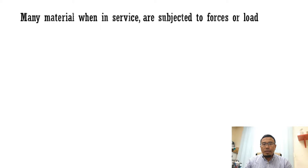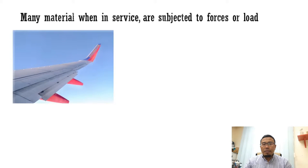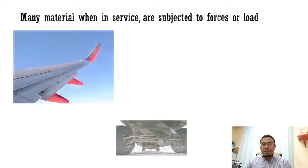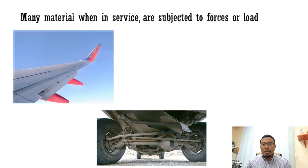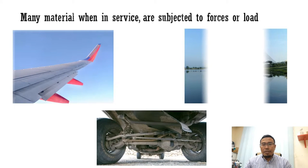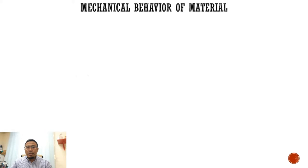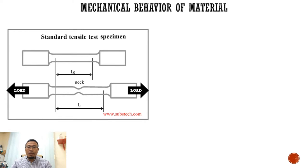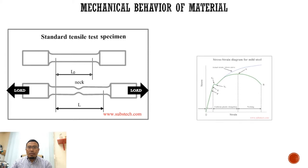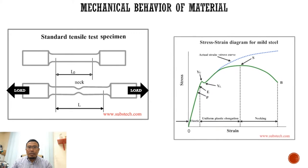It is important for engineers to know how the various mechanical properties are measured and what these properties represent. Many materials in service are subjected to forces or loads — for example, the aluminium alloy from which an airplane wing is constructed, steel in the automobile axle, and the ropes for a bridge. In such situations, it is necessary to know the characteristics of the material and to have a good design so that any deformation will not be excessive and fracture will not occur.